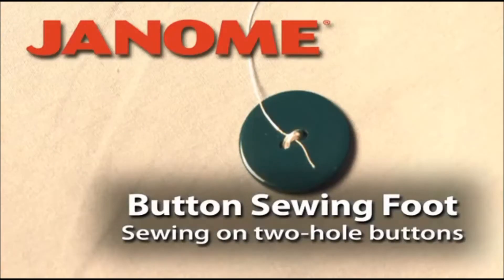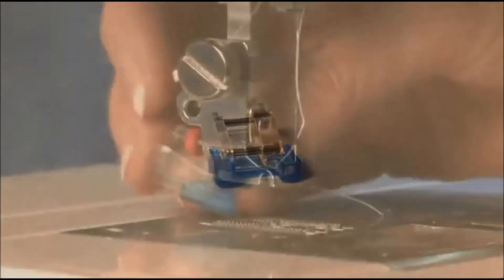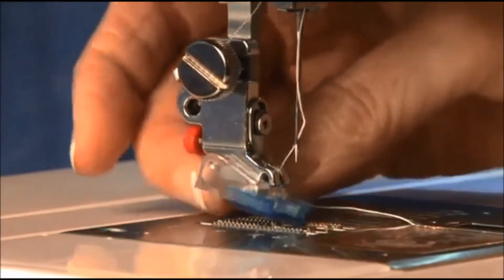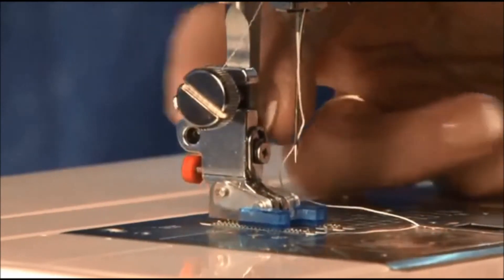The button sewing foot makes sewing on two-hole buttons fast and easy. To attach the foot, slide the bar onto the back of the presser foot holder and then lower it to snap the foot into place.